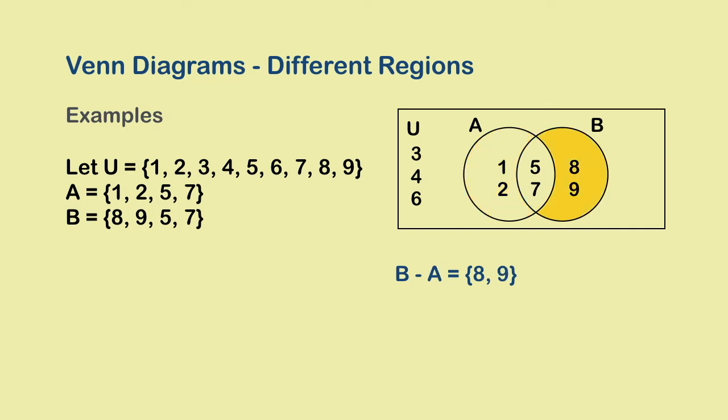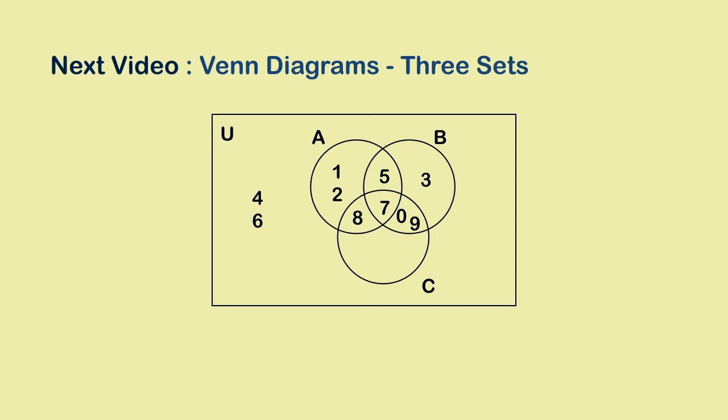Similarly, this is B-A. Okay, so that was about the different regions. The next video covers the Venn diagrams for a system of three sets and a universal set. Thank you.